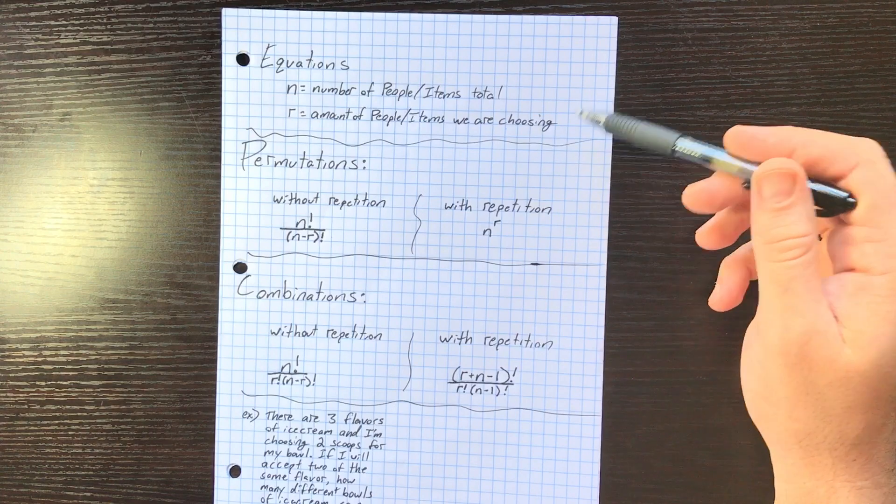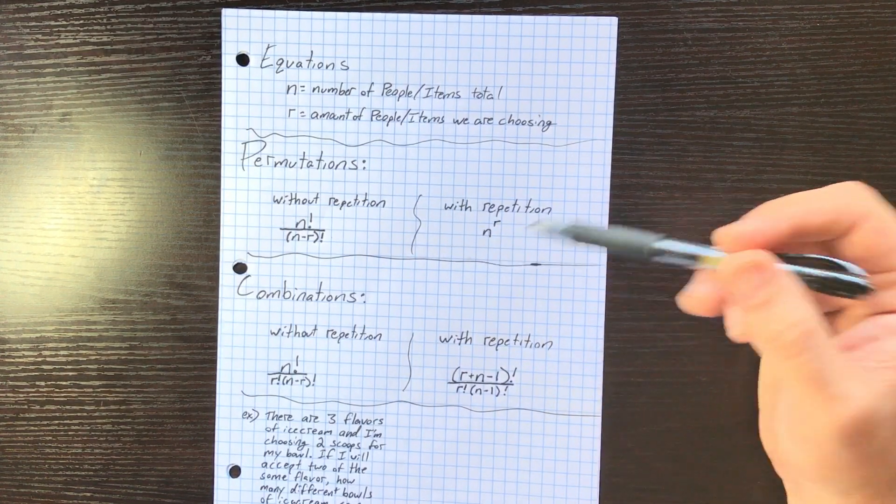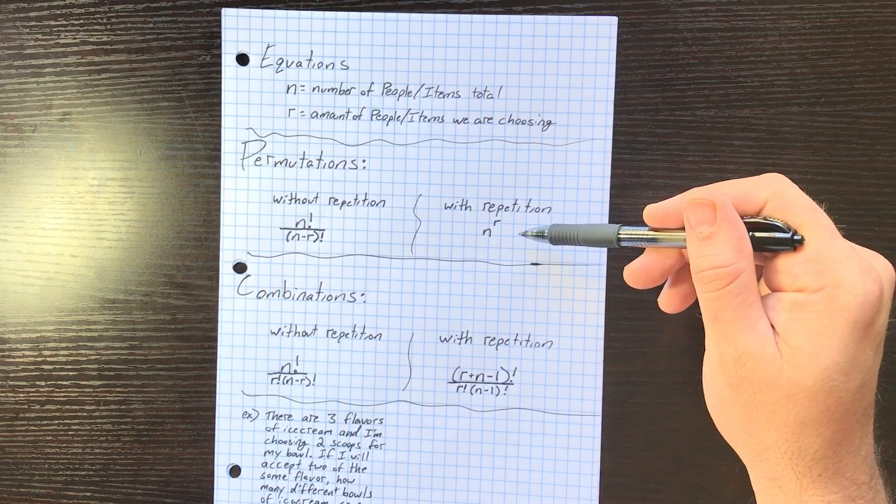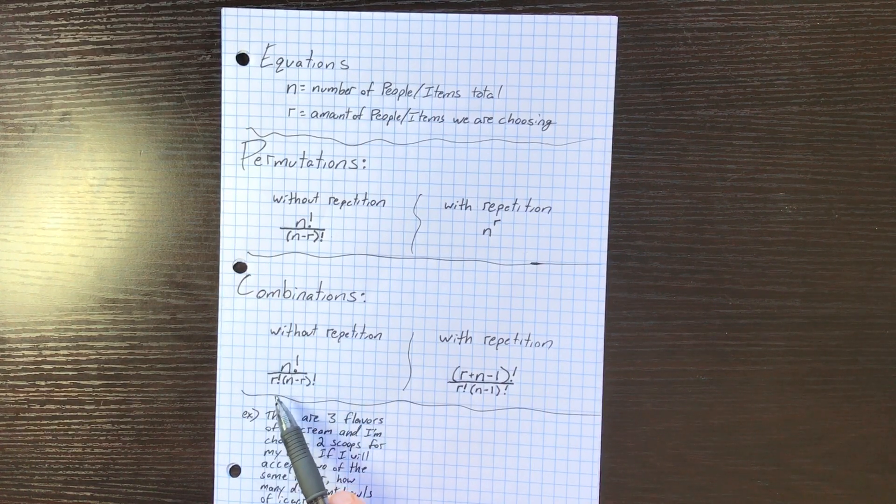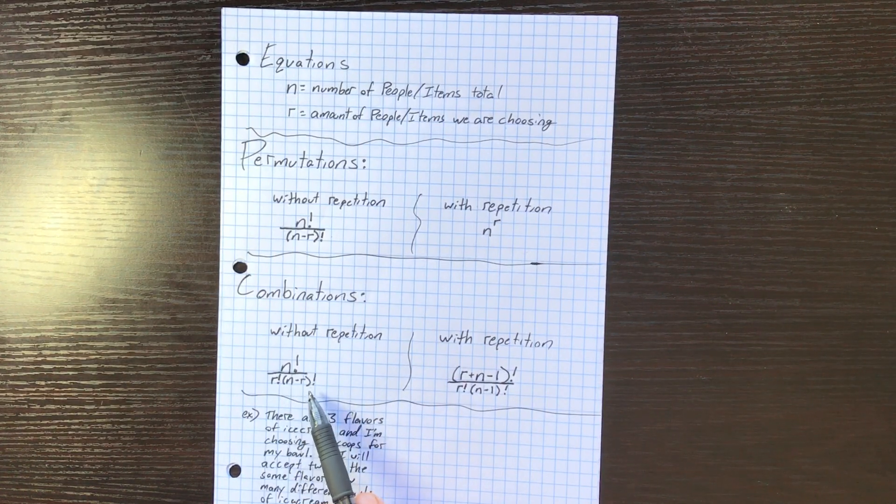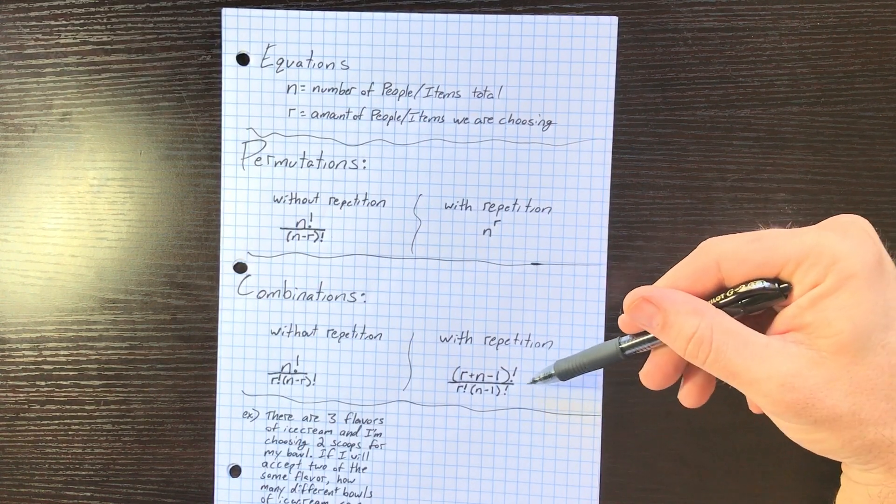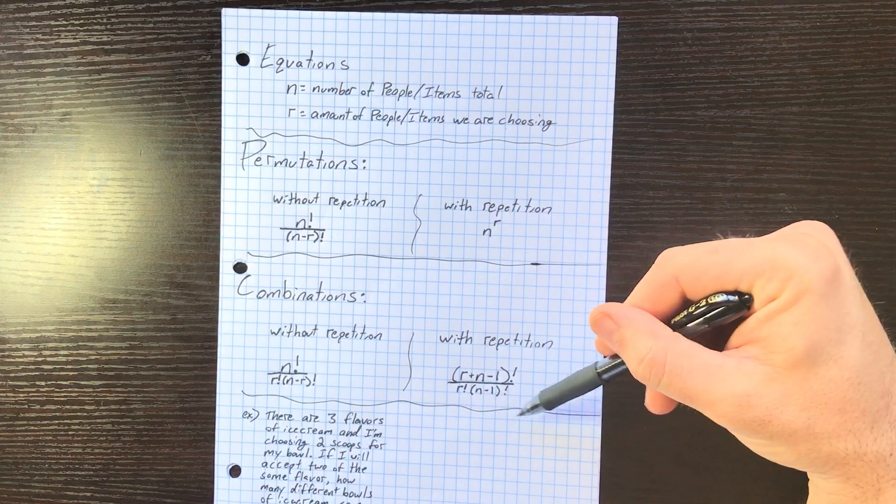N is the total number of people or items, r is the amount of people or items that we're gonna choose. So permutation without repetition: n factorial over (n - r) factorial. If we have repetition: n to the power of r. Combinations without repetition: n factorial over [r factorial × (n - r) factorial].